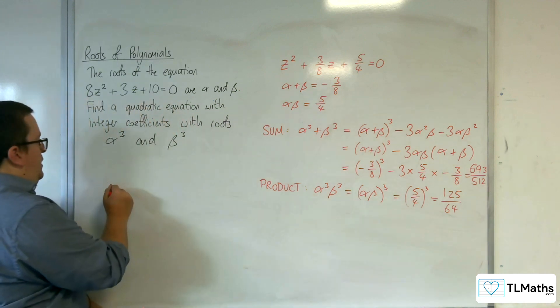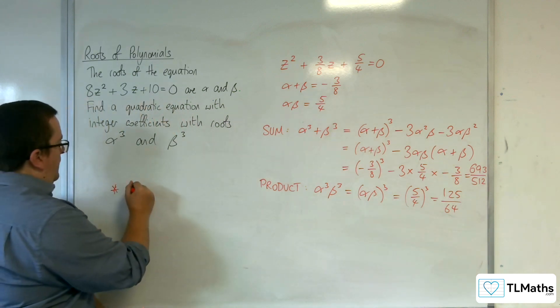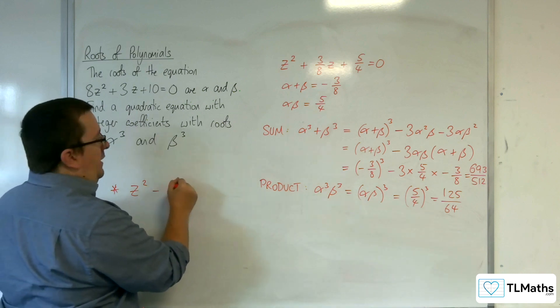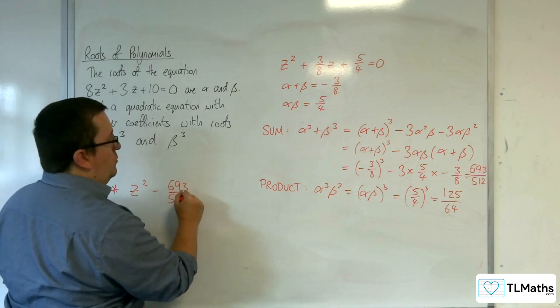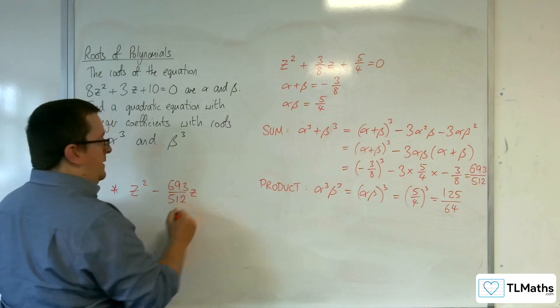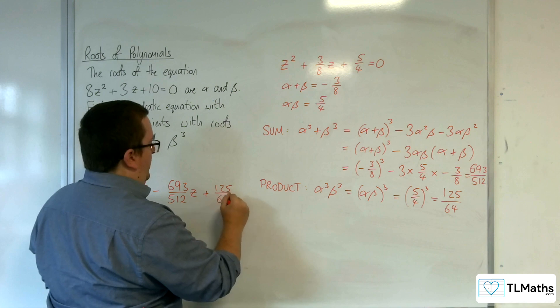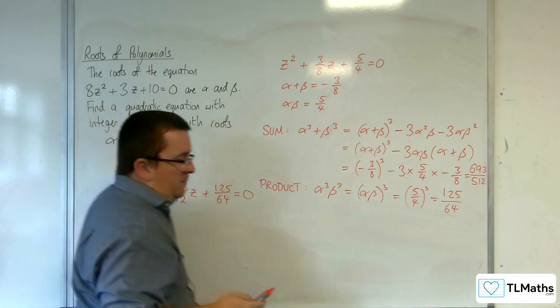So my new quadratic equation will be z² - 693/512 z + 125/64 = 0.